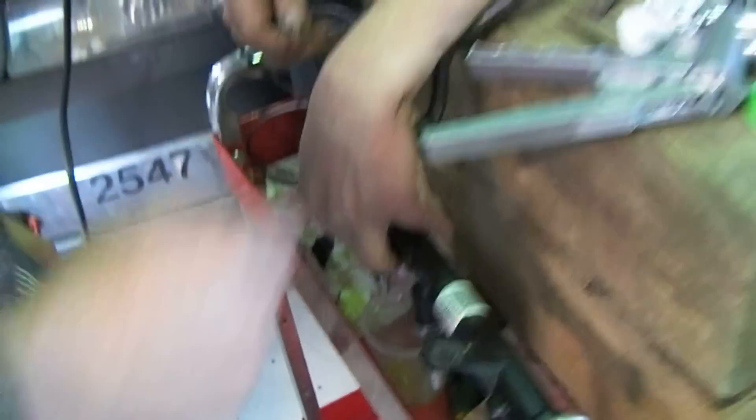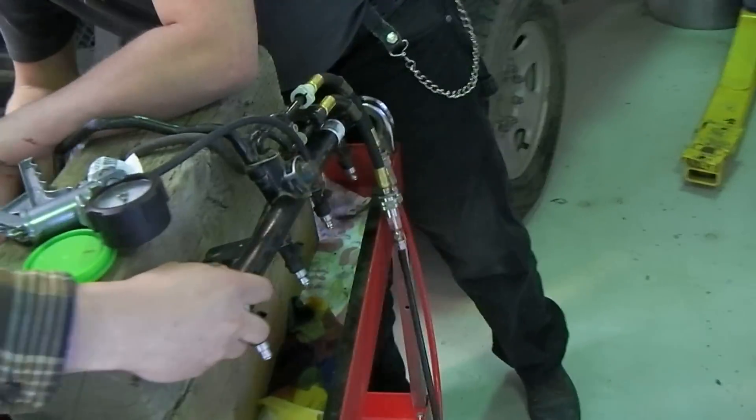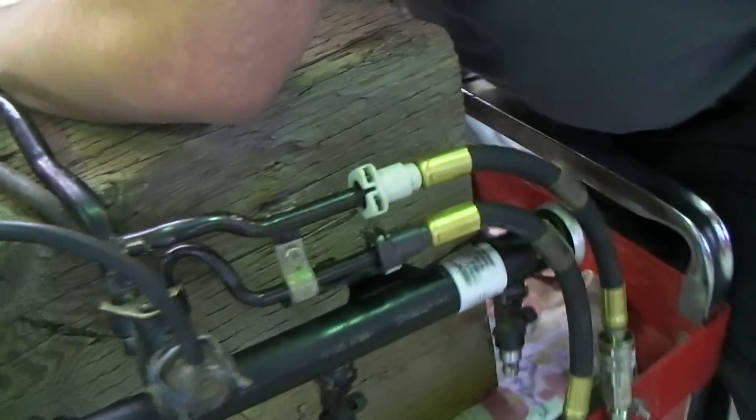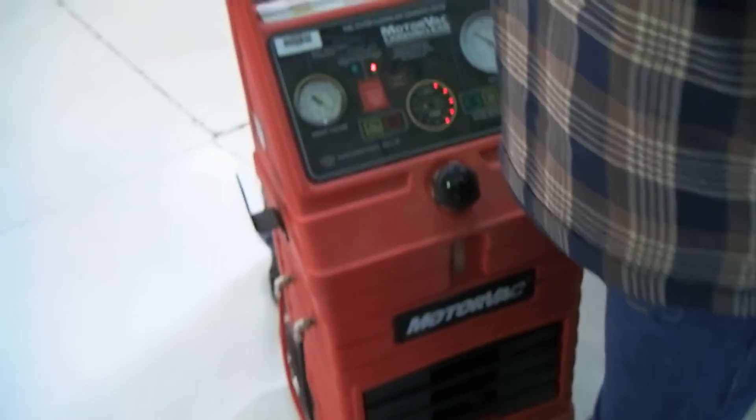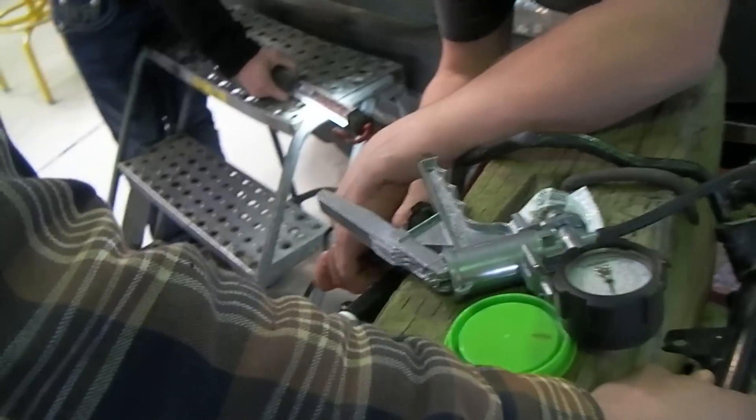The fuel rails are hooked up to our fuel injector cleaner. So that's what we're using to pressurize this fuel rail as we go through and manually test each injector.